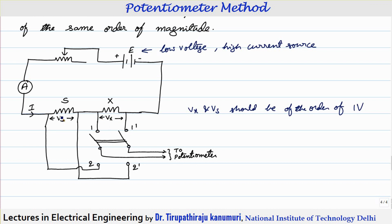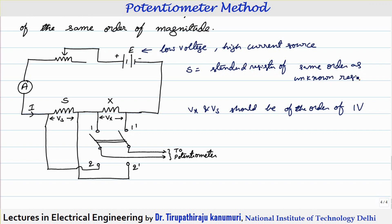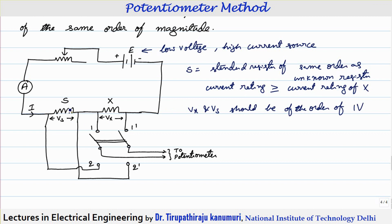Around 1 volt should appear across Vs and Vx, where S is the standard resistor of the same order as the unknown resistor — this is the first condition. The second condition is that the current rating of the standard resistor should be greater than or equal to the current rating of X, so that it will not get damaged.